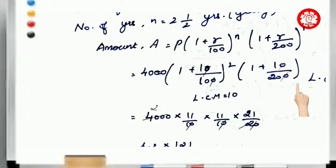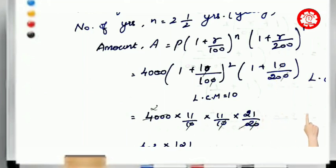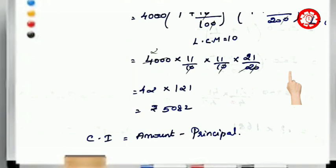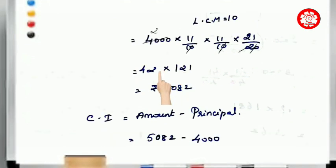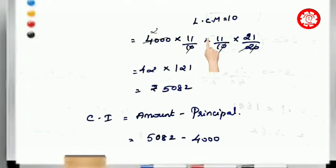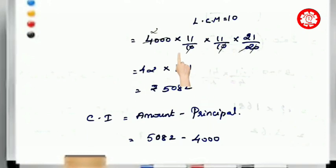We take LCM value 20. Cross multiplying: 1 into 20 is 20, so 20 plus 1 is 21 by 20. Now simplifying: 4000 times 11 by 10 squared times 21 by 20. Here 11 times 11 is 121. Multiplying gives us the amount as 5082.